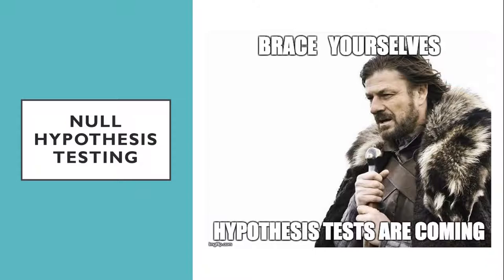Unfortunately, sample statistics are not perfect estimates of their corresponding population parameters. This is because there is a certain amount of random variability in any statistic from sample to sample. The mean number of depressive symptoms might be 8.73 in one sample of adults with clinical depression, 6.45 in a second sample, and 9.44 in a third, even though these samples are selected randomly from the same population. This random variability in a statistic from sample to sample is called sampling error.